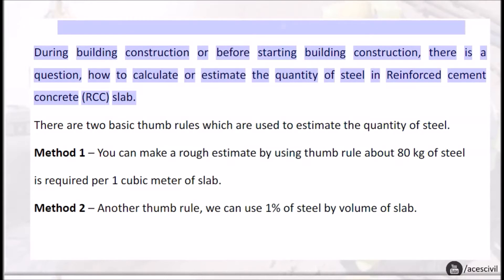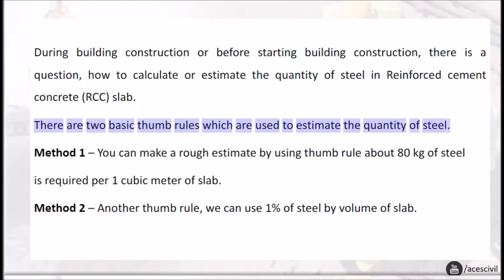In this video, we will discuss the most asked questions in civil engineering during building construction or before starting building construction. There is a question: how to calculate or estimate the quantity of steel in reinforced cement concrete RCC slab? There are two basic thumb rules which are used to estimate the quantity of steel. Method one: you can make a rough estimate by using thumb rule about 80 kilograms of steel is required per one cubic meter of slab. Method two: another thumb rule we can use one percent of steel by volume of slab.